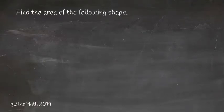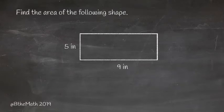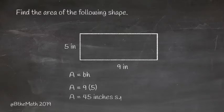Find the area of the following shape. We have a rectangle with side lengths of 5 and 9, so the formula is base times height. So we would just multiply 9 times 5 and get 45 inches squared or square inches.